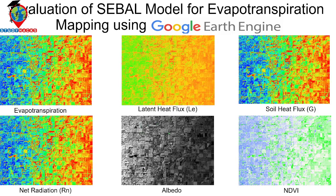I have already created some processing steps for SEBAL. To calculate evapotranspiration, we need latent heat flux, soil heat flux, net radiation, albedo, and NDVI. I will explain how each of these is created, and I will also show you how to work with Google Earth Engine to map evapotranspiration using the SEBAL model.